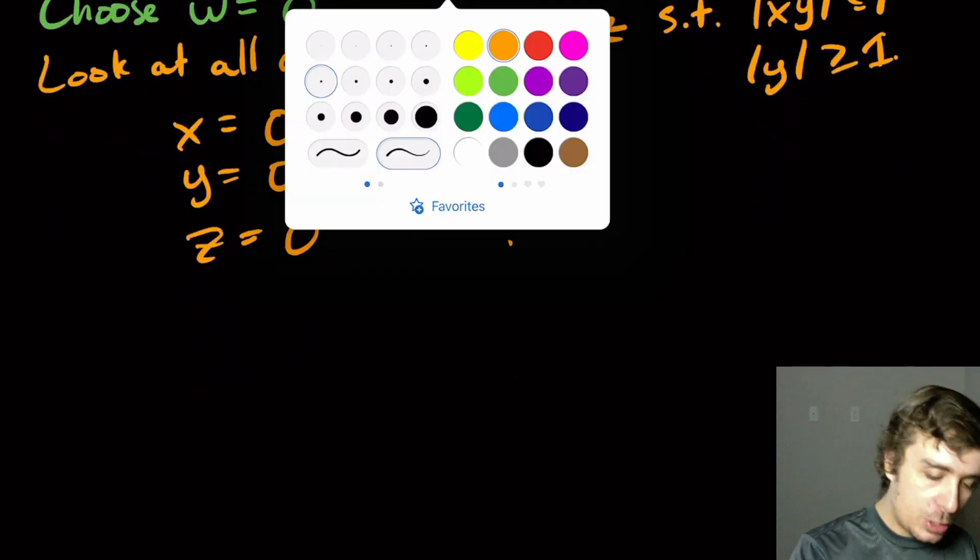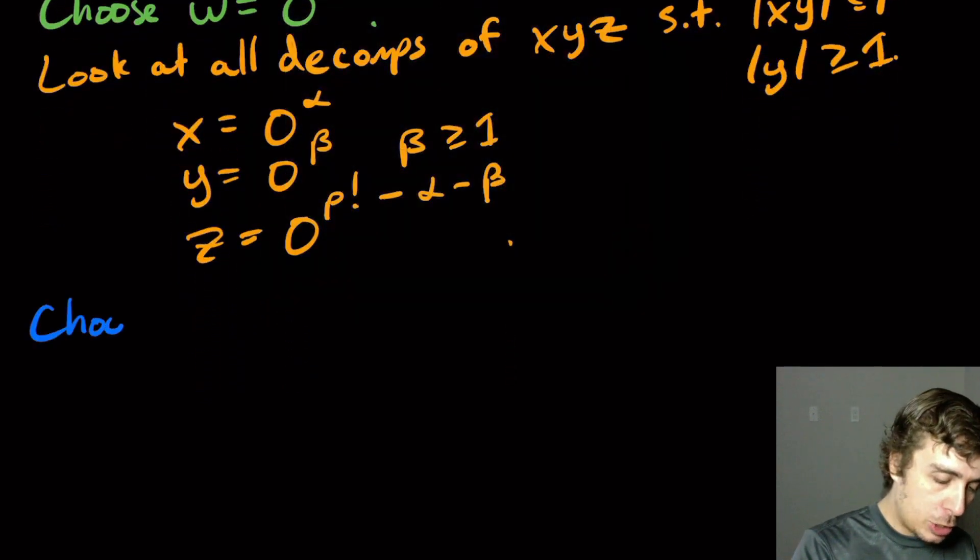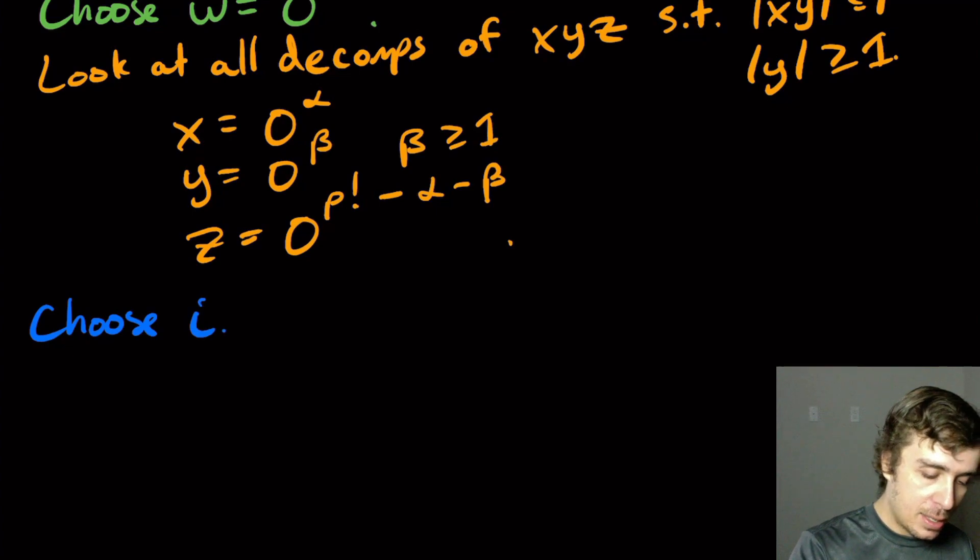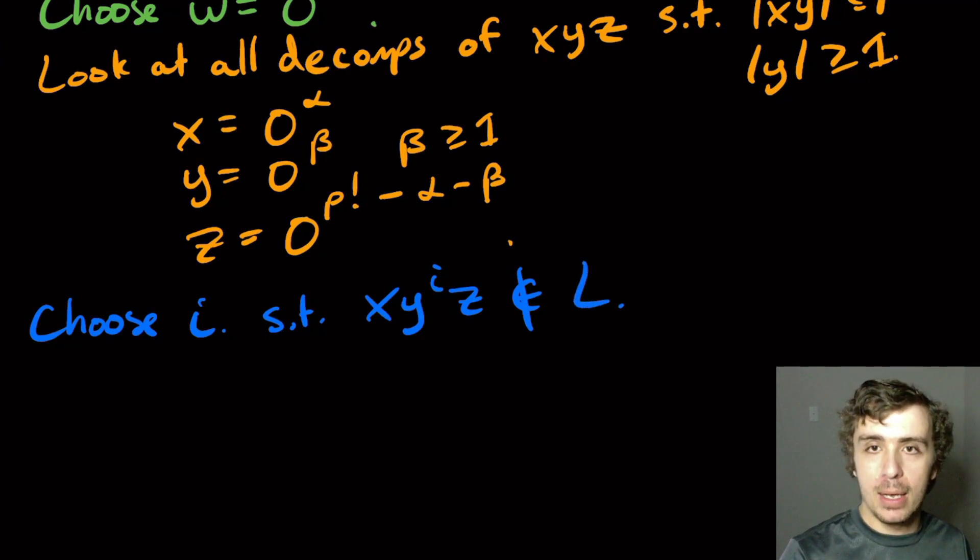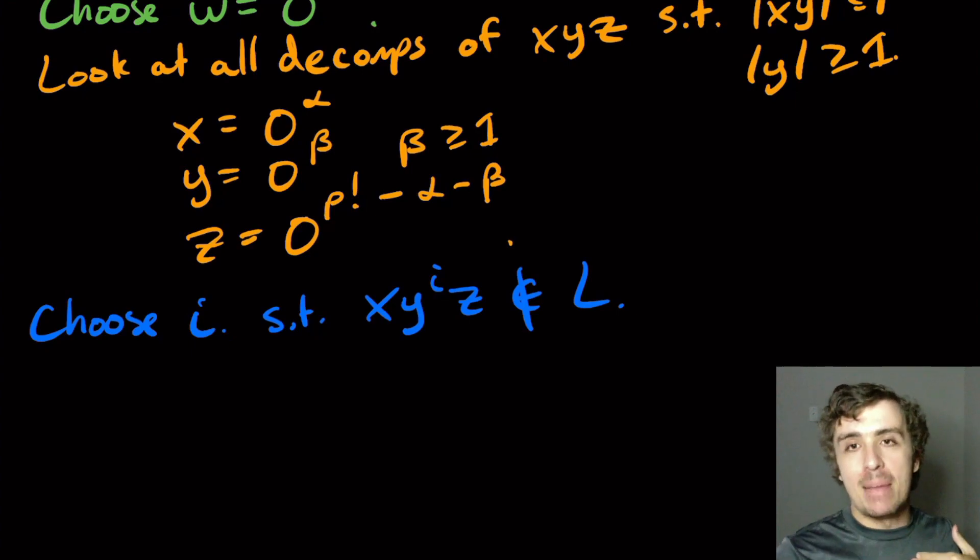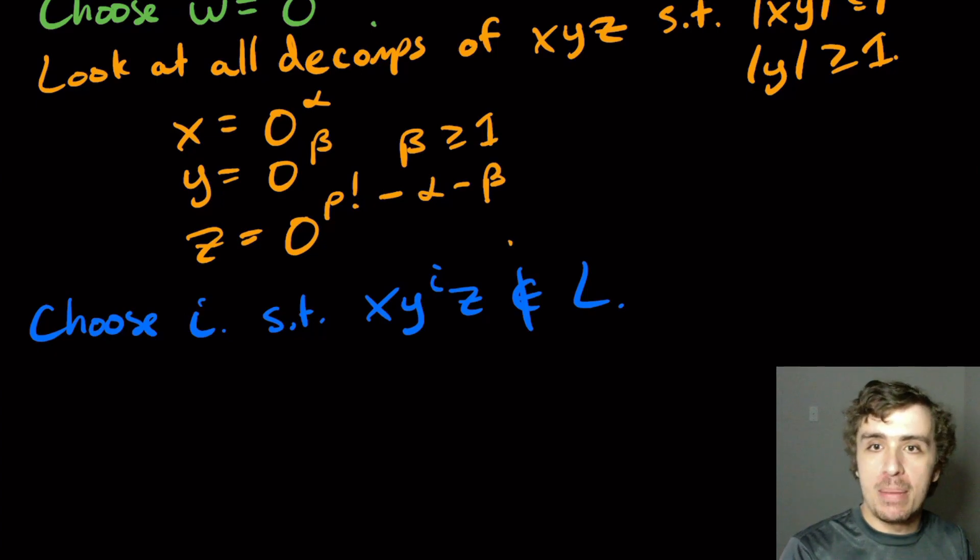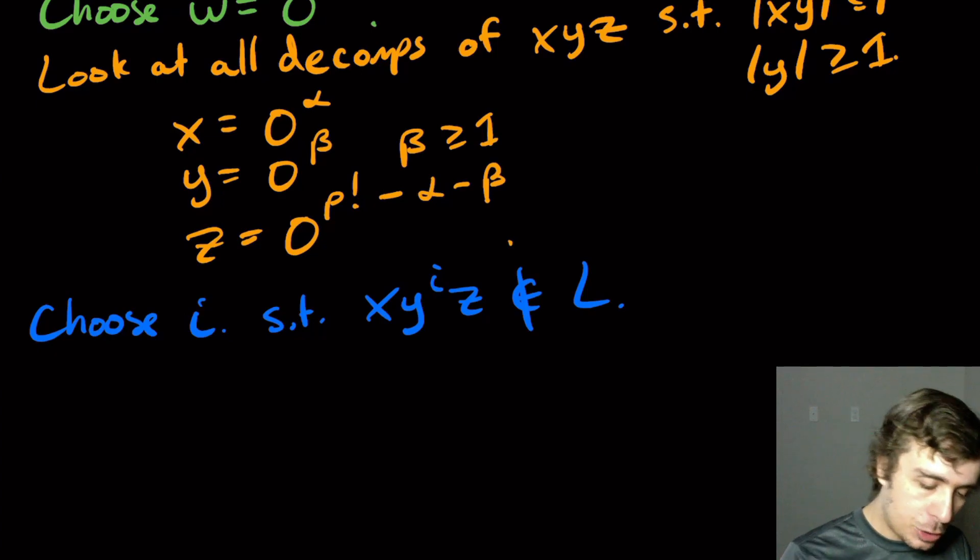And so what we want to do is we want to choose an i such that x, y to the i, z is not in the language. And the reason is that we want to arrive at a string that's not in the language from a string that we had, because that would contradict the for all statement in the pumping lemma. So let's compute what that is. So that's going to be x, y to the i, z,